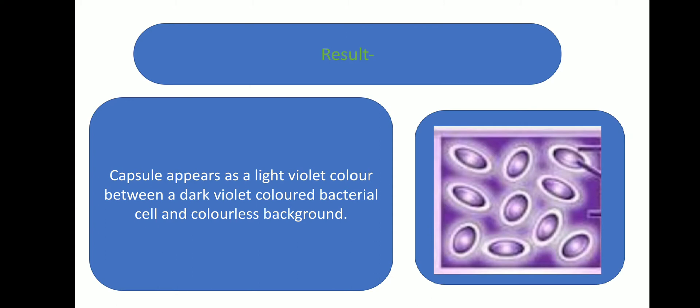Result: the capsule appears as a light violet in colour, while the cell appears dark violet in colour, and the background appears colourless.